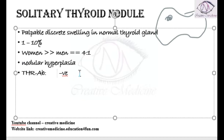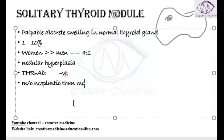Solitary thyroid nodule has more chances of being neoplastic compared to multi-nodular goiter. If there are multiple nodules, most of the time it is a benign lesion. If there is one nodule, there are more chances of malignancy.